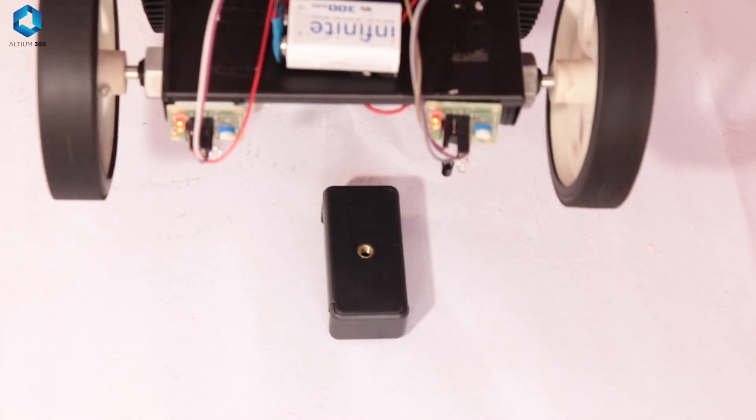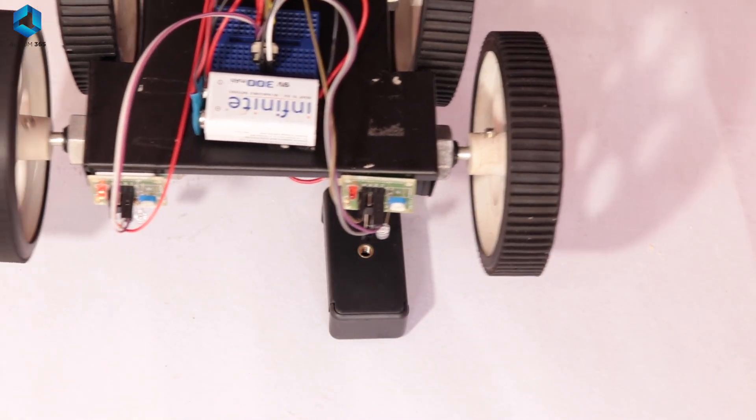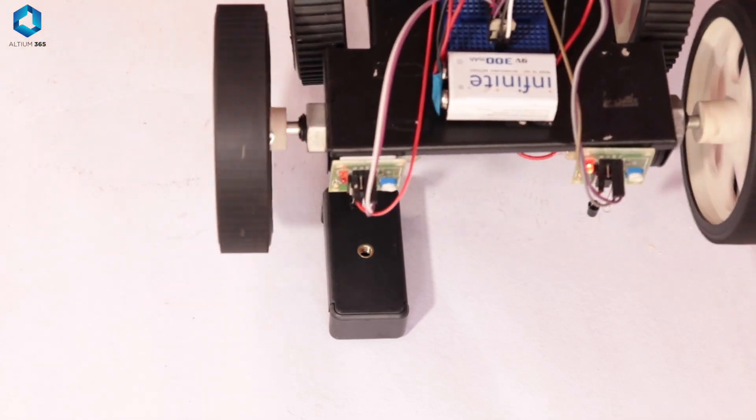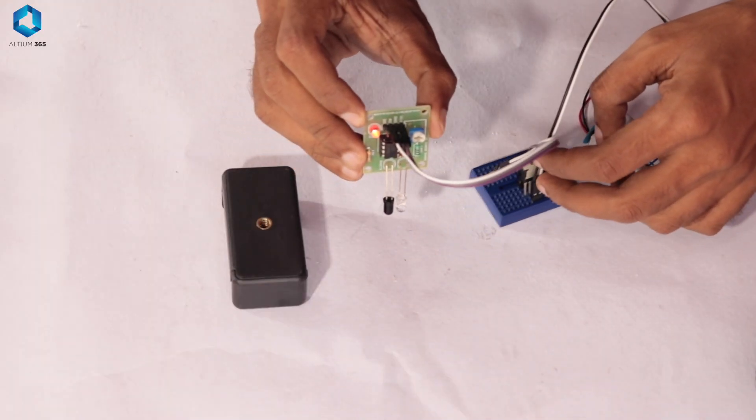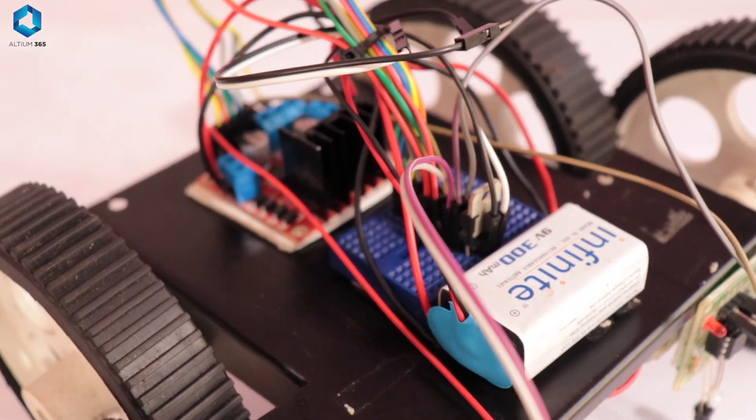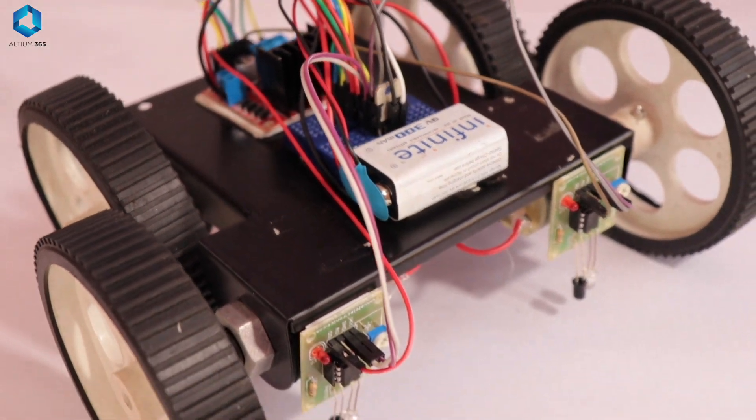The first project that I made was a line follower. Basically it's a robot that follows a black line on a white surface. It was very simple. It didn't have any kind of microcontrollers. All it had was some motors and an IR sensor and a small circuit to drive the motor as per the output it received from the IR sensor.